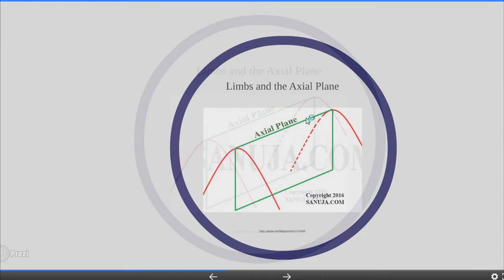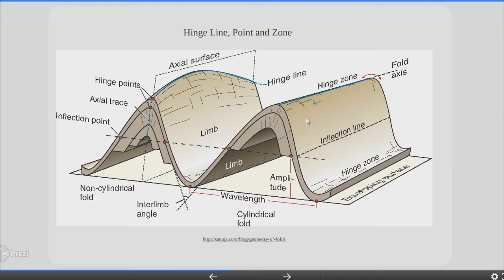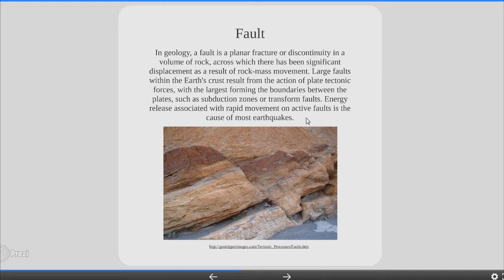In these slides we can see limbs and axial planes. What is a hinge, limb and axial plane? A fold surface seen in profile can be divided into hinge and limb portions. The limbs are the flanks of the fold and the hinge is where the flanks join together. The hinge point is the point of minimum radius of curvature, or maximum curvature, for a fold. The crest of the fold is the highest point of the fold surface and the trough is the lowest point. The inflection point of a fold is the point on a limb at which the concavity reverses — on regular folds this is the midpoint of the limb.